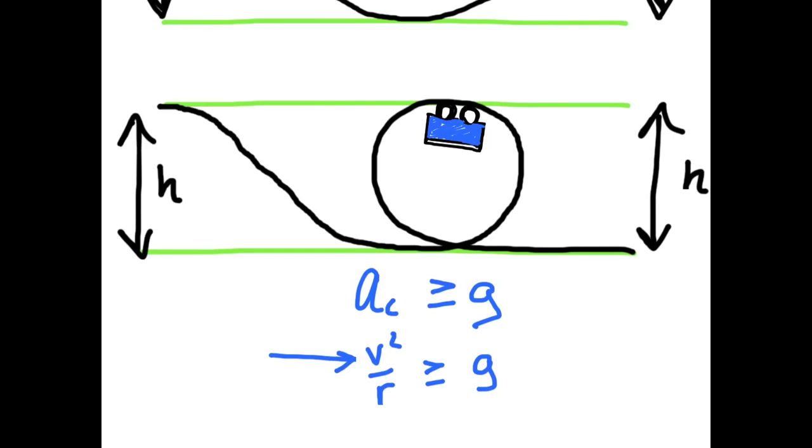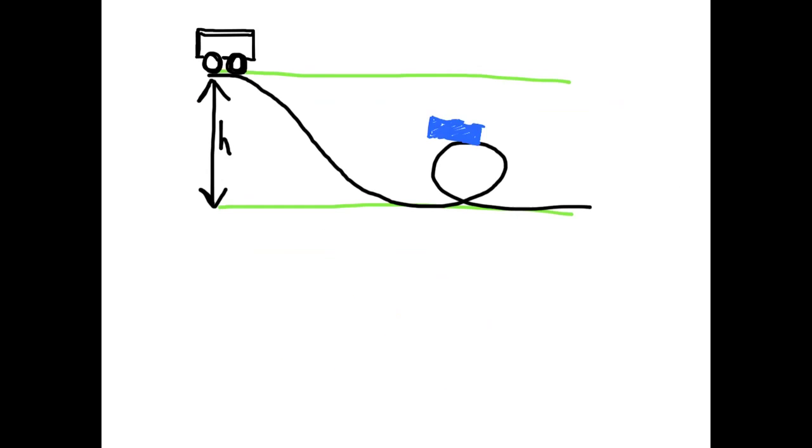So this is not going to work. You won't be able to make it over this loop. You would just fall. So we're going to need to have some height, 2r we'll call it, that represents twice the radius of the loop that's going to be less than our initial height h. If we're going to make it around the loop with any sort of speed at the top, remember we need enough speed so that our centripetal acceleration is at least as great as gravity.